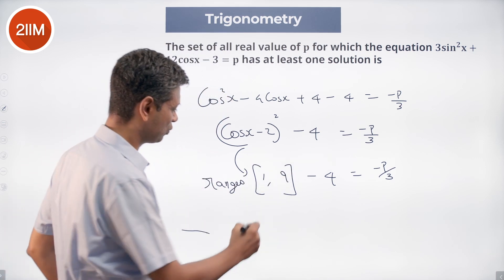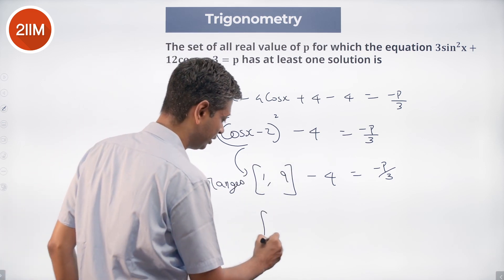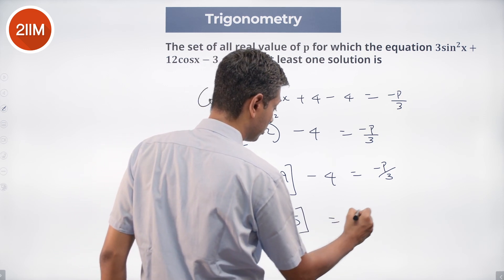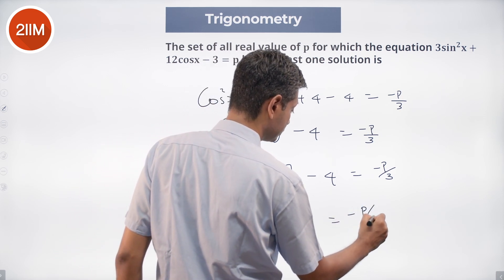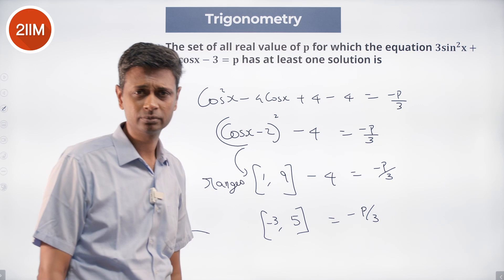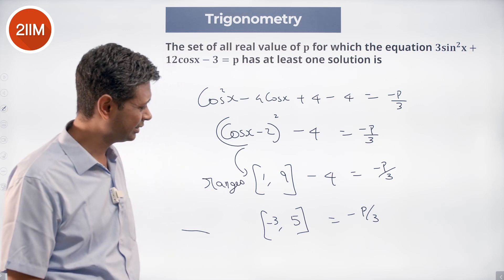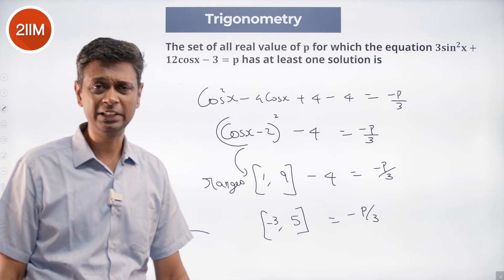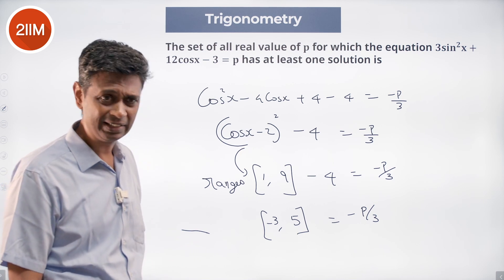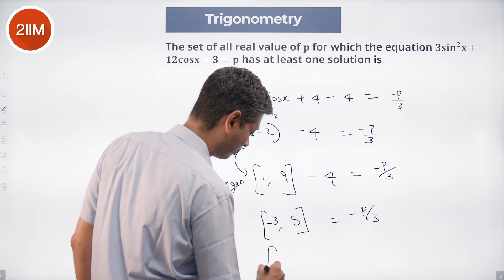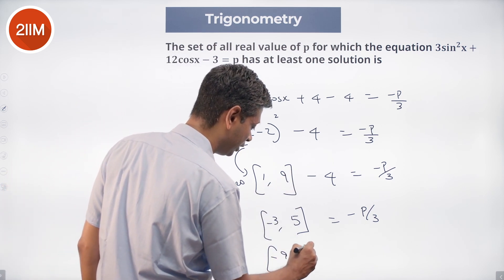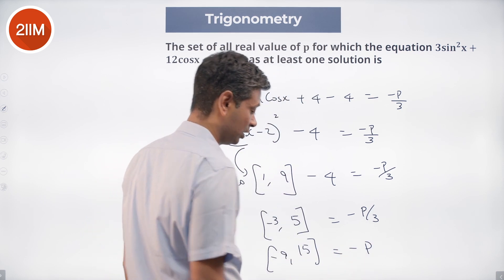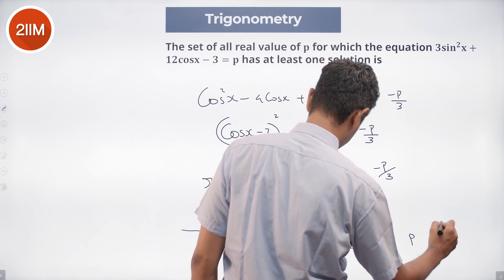Subtracting 4: the expression (cosx - 2)² - 4 ranges from 1 - 4 = -3 to 9 - 4 = 5. This equals -p/3, so -p/3 ∈ [-3, 5], meaning -p ∈ [-9, 15], and therefore p ∈ [-15, 9].